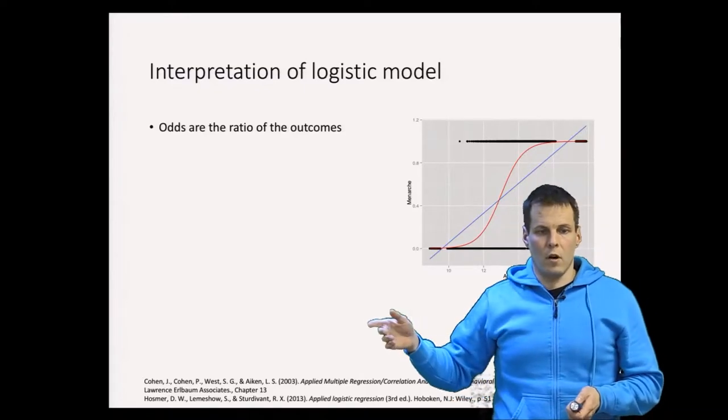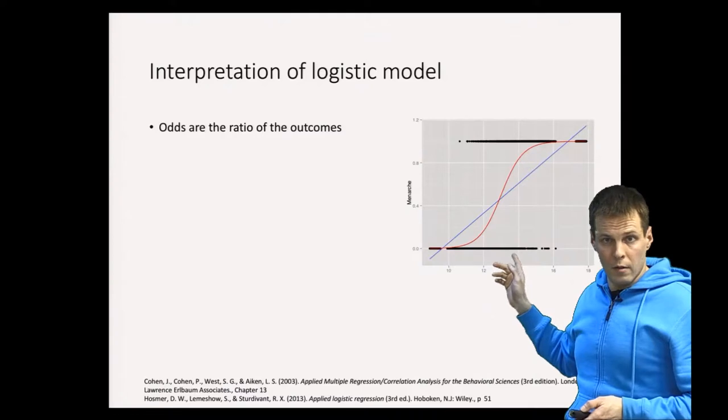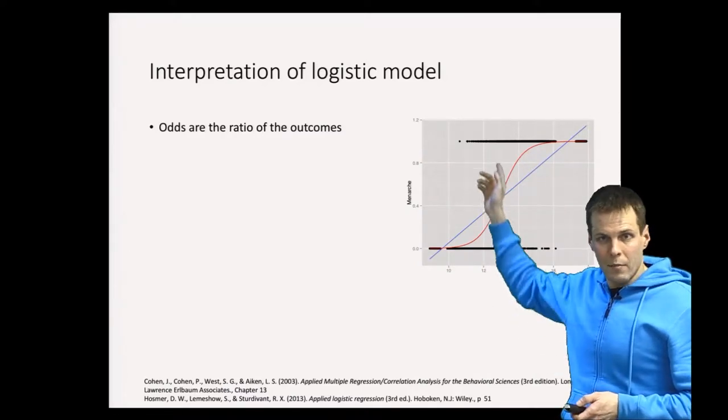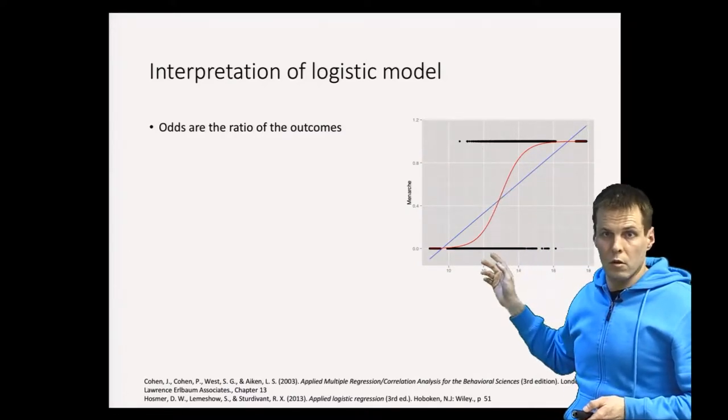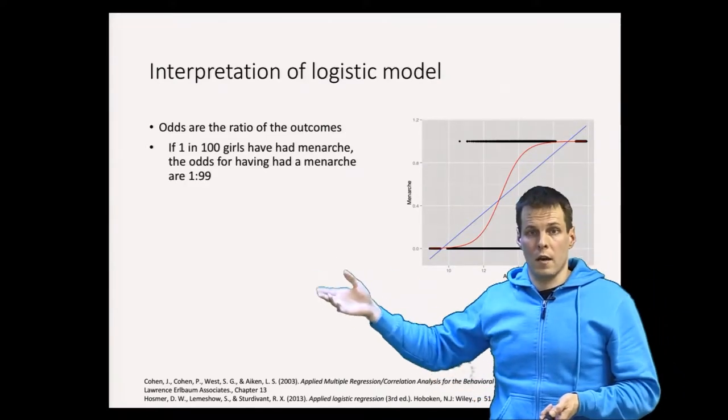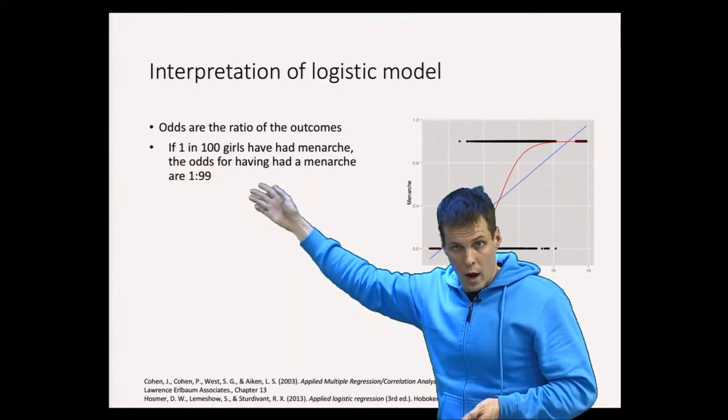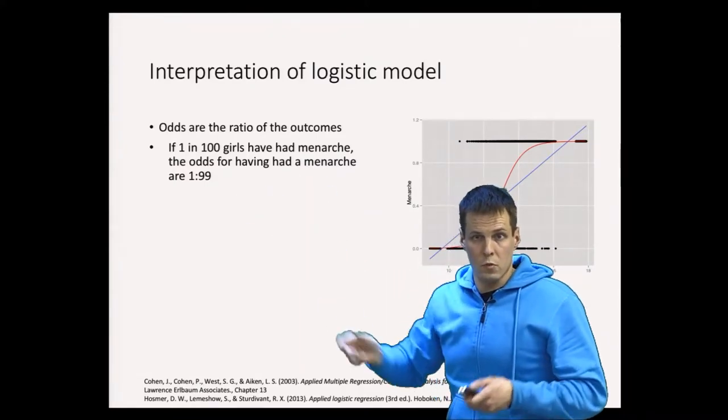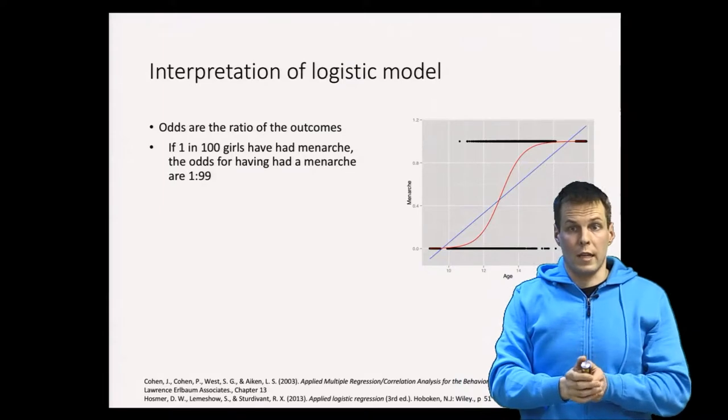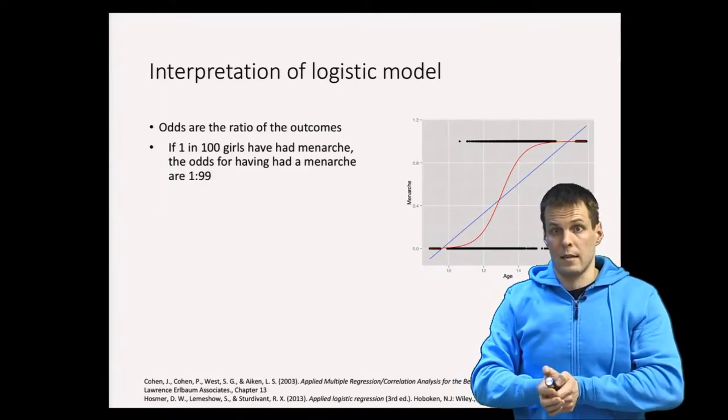So here we have the outcome of a girl having had menarche and not having had menarche. So it's two outcomes. If one in 100 girls have had menarche, then odds for having had menarche is one to 99, because one out of 100 has had it, and then the remaining 99 hasn't had it.